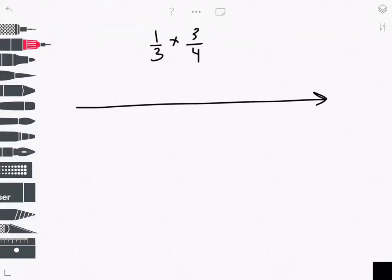Let's start with a number line, and this is proper fraction multiplication, so I'm going to label my endpoints 0 and 1 because I know my product will also be a proper fraction or a number less than 1.